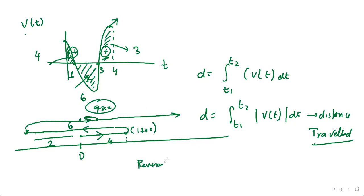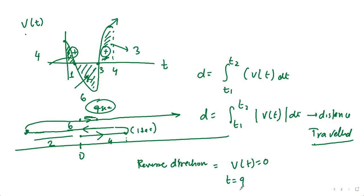It's very important to understand where the particle reverses direction. A particle reverses direction when v(t) = 0, so you solve for t at those instants. That's the key concept as far as these terms are concerned.